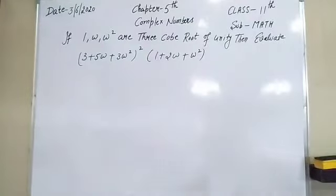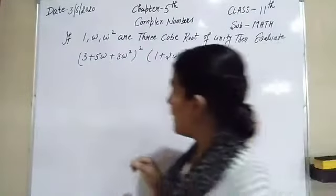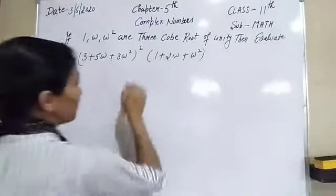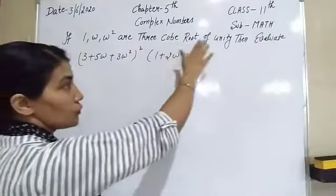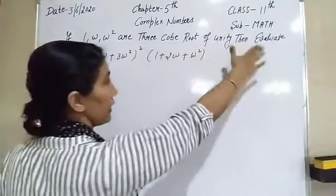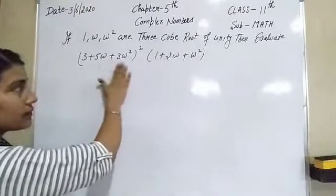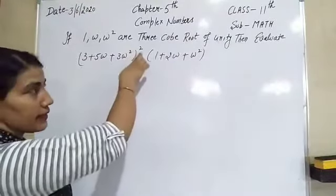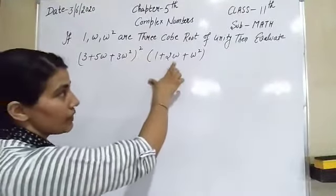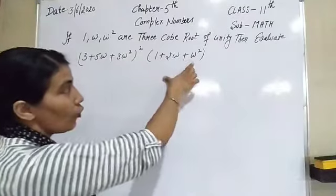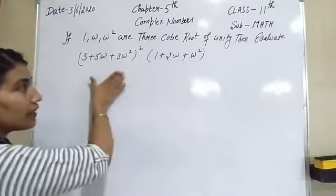The next question: if 1, ω, ω² are the three cube roots of unity, find the value of (3 + 5ω + 3ω²)² × (1 + 2ω + ω²).